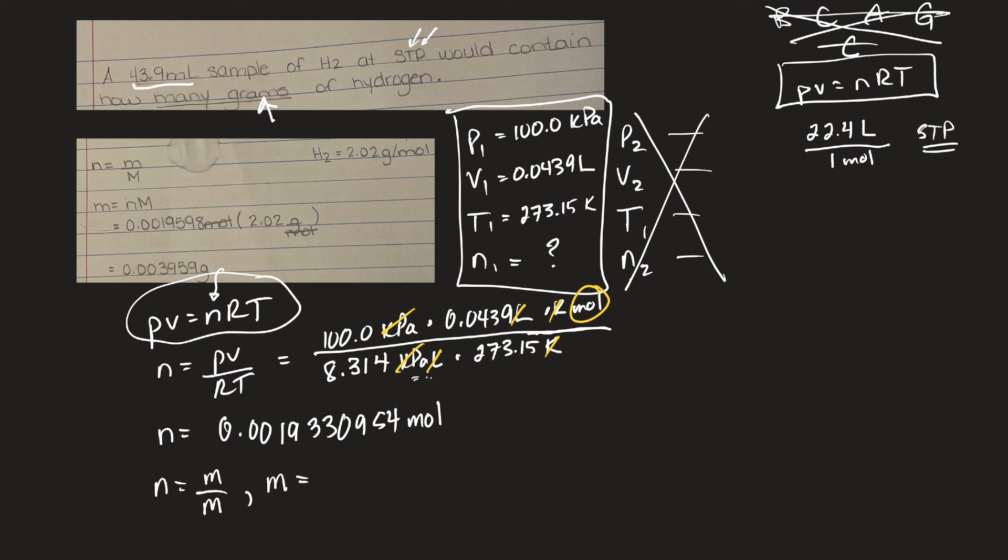My moles I just have, 0.0019330954 times the molar mass is 2.02 grams per mole. So I'll take that number that I had. This was moles, I forgot to write my unit. Take the number I had in my calculator and times it by 2.02.